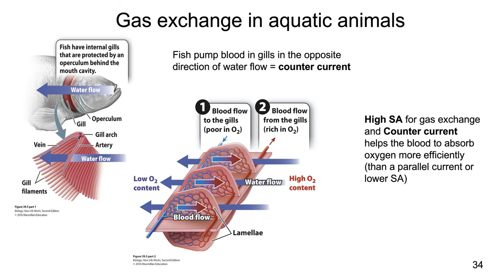Key trends: high surface area to volume ratio for gas exchange, and countercurrent flow where the blood runs in the opposite direction of water flow. This allows blood to absorb oxygen much more efficiently than it would if blood ran in the same direction as the water.